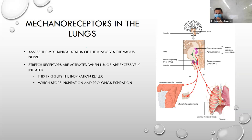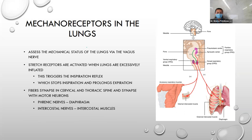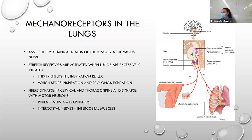The vagus nerve fibers synapse in the cervical and thoracic spine with motor neurons. Specifically, phrenic nerves control the diaphragm, and costal nerves control the intercostal muscles — that's how accessory muscles get activated. The process: mechanoreceptors detect stretch, signal goes up via vagus, brain sends signal down through cervical/thoracic nerves, synapsing with phrenic or intercostal nerves, stimulating the diaphragm or intercostal muscles.